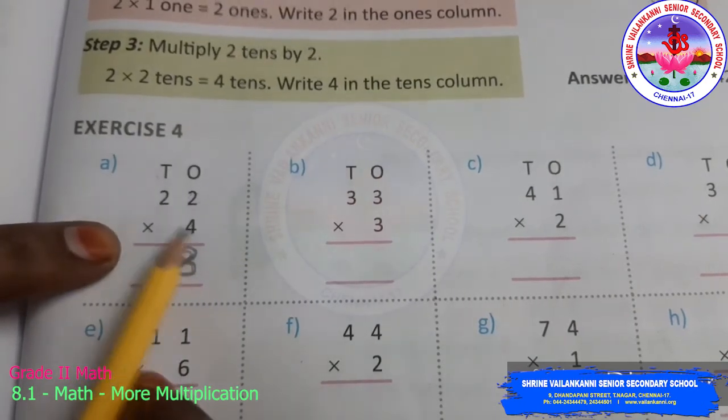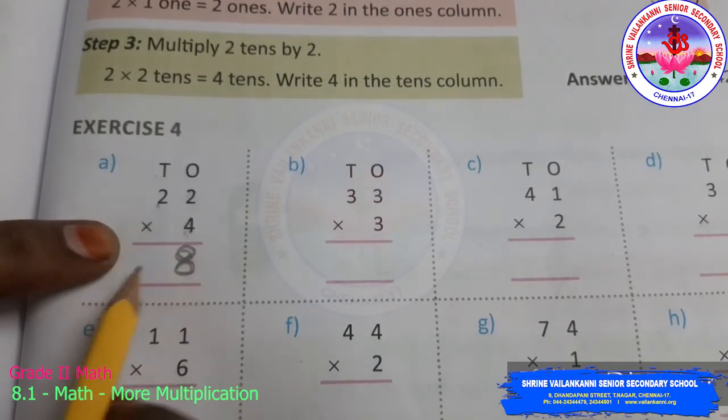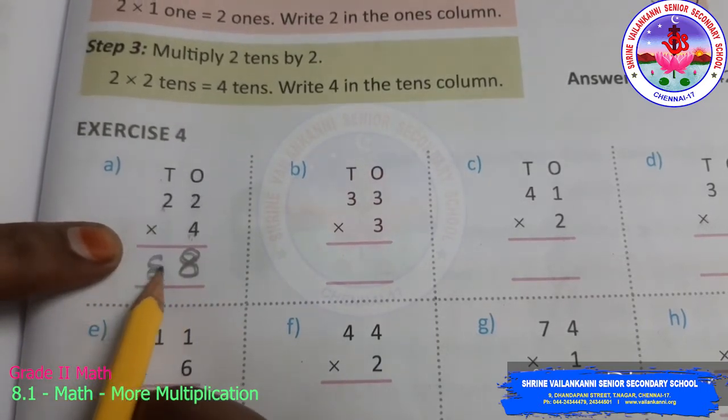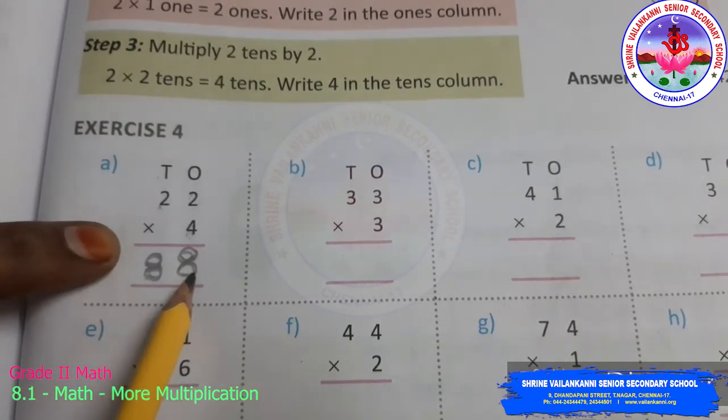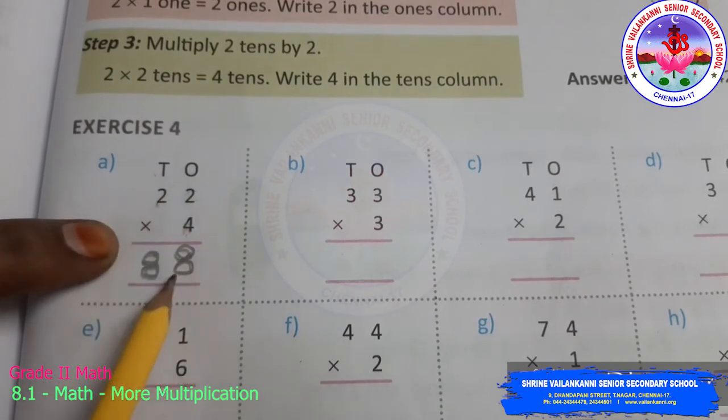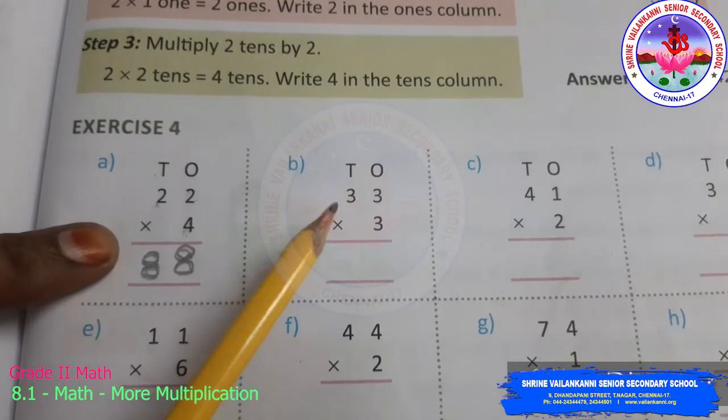Now, again this number into this number. Four twos are eight. Getting the same number. So, the answer is 22 into four is 88. Be careful to write the digits in the correct place.